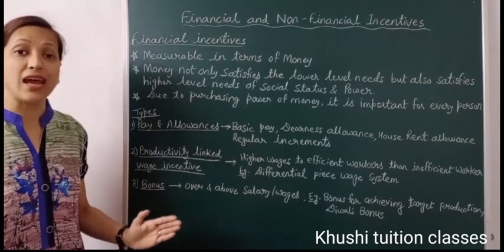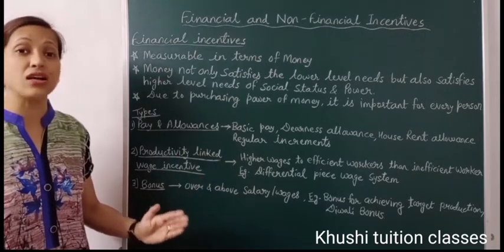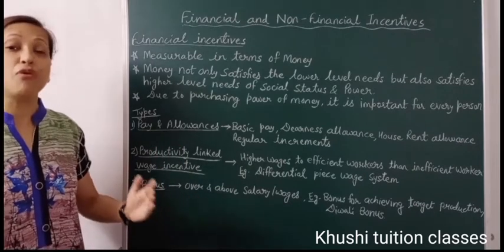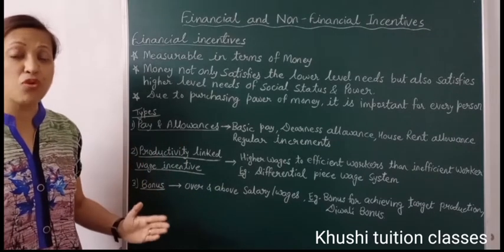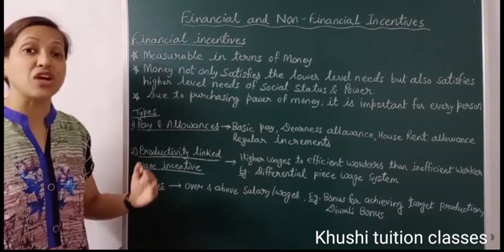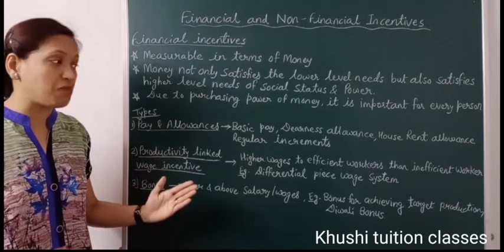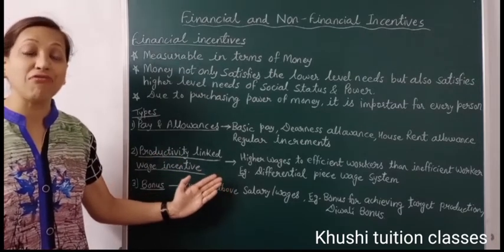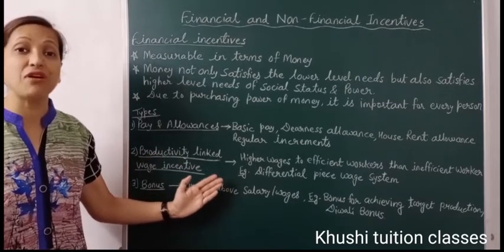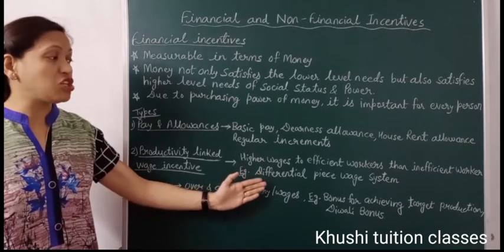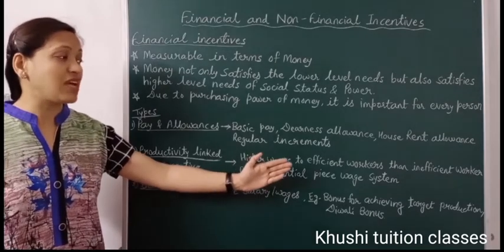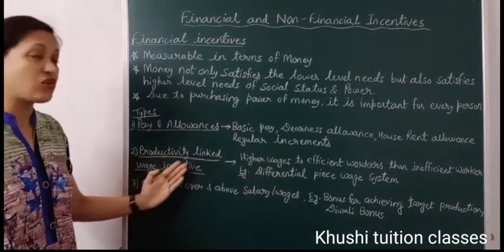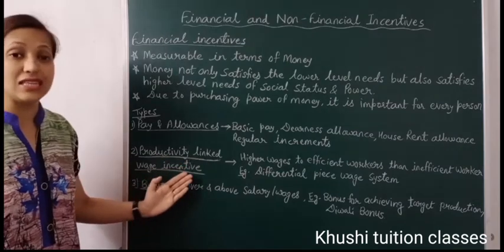so that all workers in the organization improve their productivity and performance in order to get more payment. As you studied in Chapter 2, the scientific technique given by Taylor — the differential piece wage system — is an example of productivity linked wage incentives.